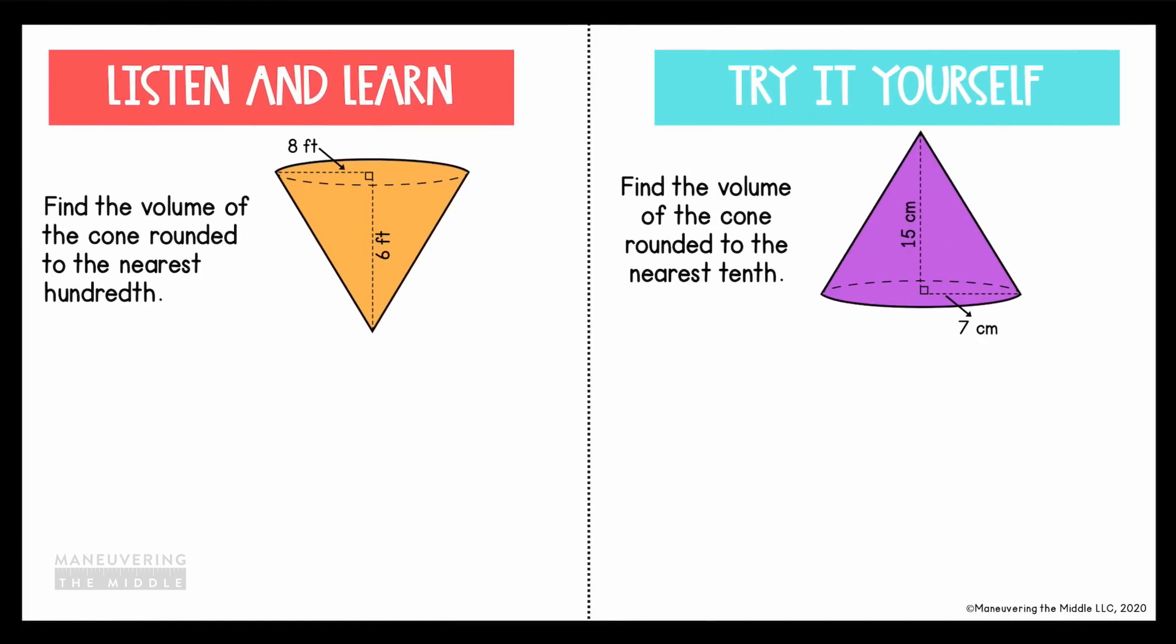Let's practice using this formula on some examples. So here on the first one, we're going to find the volume of this cone. Here's the base, and then here's the height. With volume, always start by writing your formula, which for a cone is 1/3 big B times h. I want to point out that this formula can be rewritten because multiplying by 1/3 is the same as dividing by 3, so if you prefer this version of the formula, then feel free to use it. It will always give you the same solution.